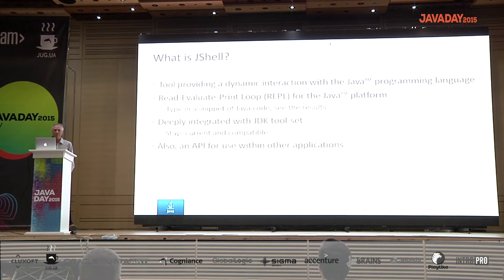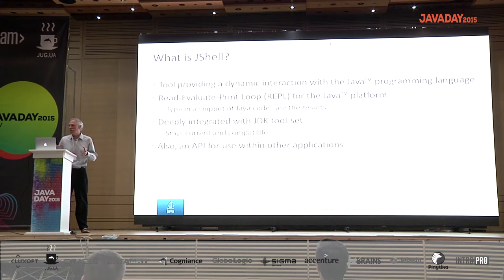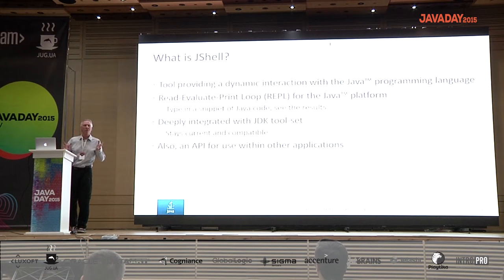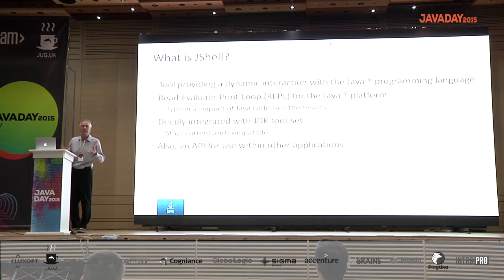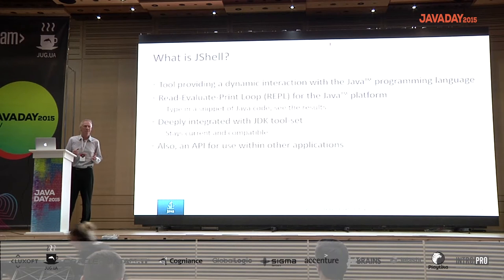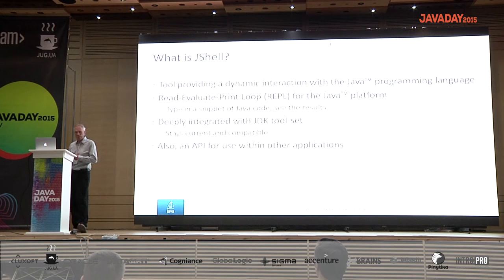So what is JShell? It's a tool for dynamically interacting with the Java language. You may have heard of REPLs — a read-evaluate-print loop — in other programming languages. This is a REPL for the Java language. Most REPLs are in what's called dynamic languages. The idea is basically: type in a snippet of Java code and immediately see the results of that snippet.